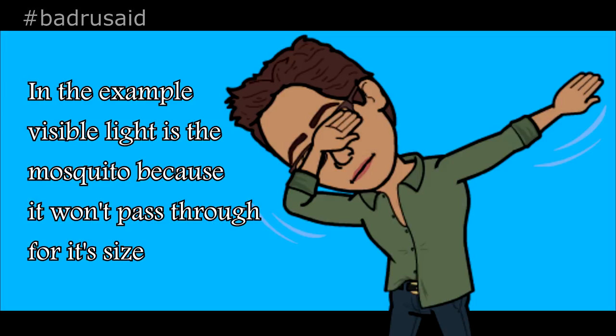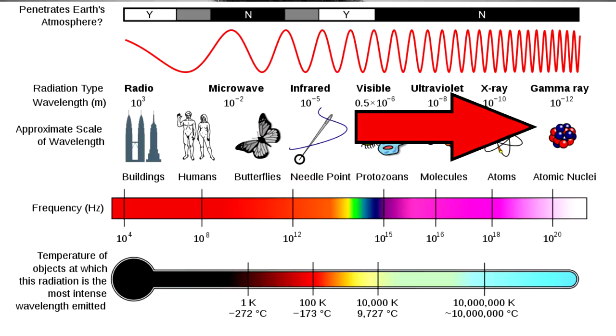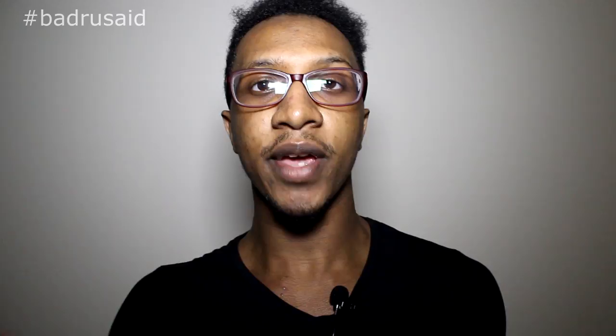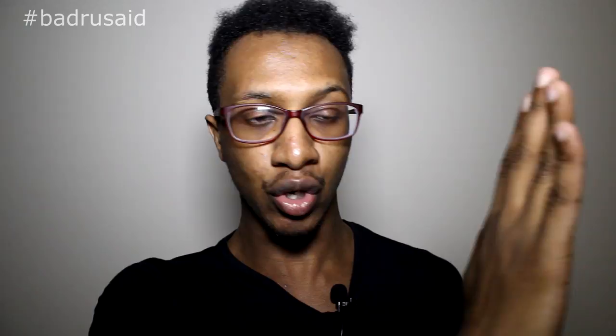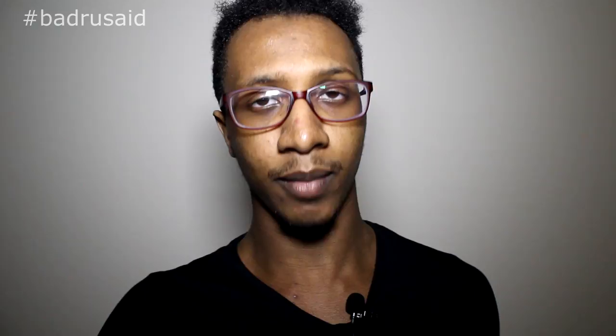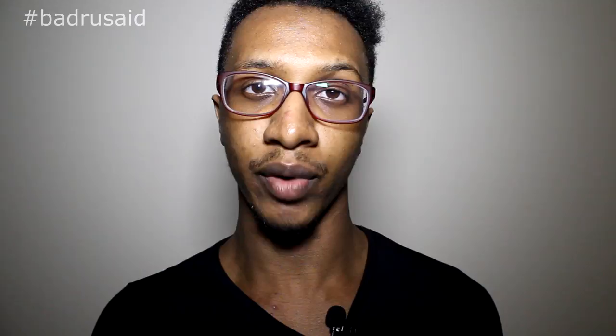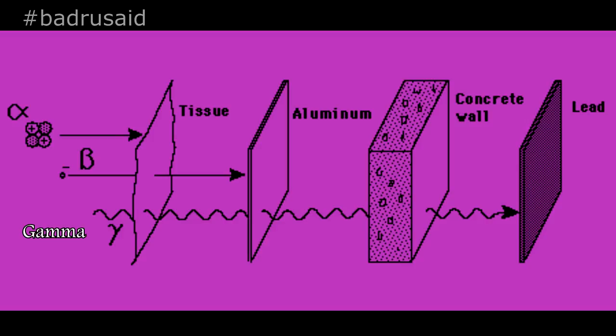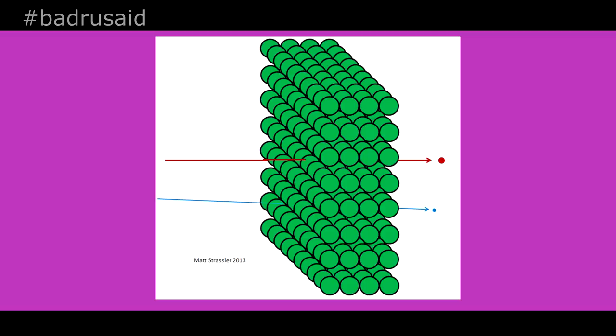That would suggest that anything smaller in wavelength than visible light — going to the right of the graph — cannot pass through. Wrong. It turns out that gamma rays, which are the smallest, can also go through the wall. So you have radio waves passing through because they're large, then as wavelength decreases, visible light cannot go through, but if you go even smaller, you can again pass through. Gamma rays pass through for a different reason — they are so small that some of them can go between the actual wall atoms and pass through to the other side.